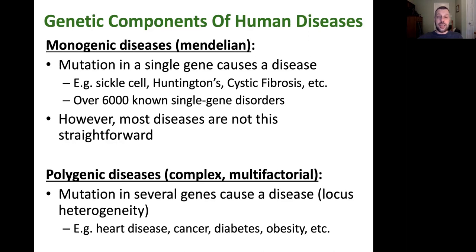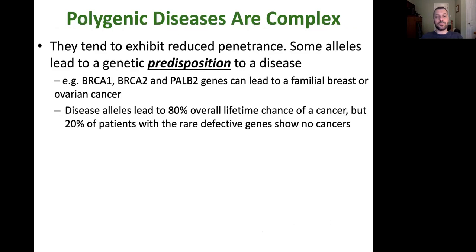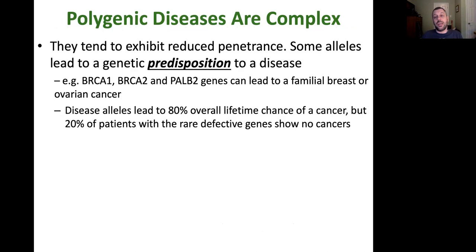A lot of diseases that people think of as running in families — sometimes skipping a generation — are polygenic diseases. They tend to exhibit reduced penetrance. It's the mixture of alleles you pick up from your parents that predisposes you to a disease state, and most human diseases are polygenic.